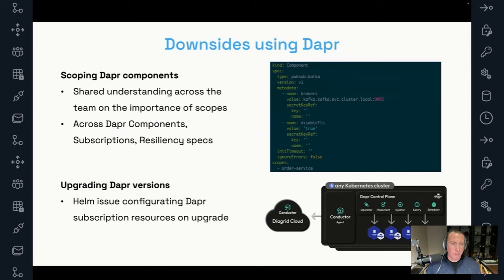Now that we've transitioned to Dapr, there were a few learning opportunities along the way. One of them was understanding that Dapr components have scope and how to properly use that scope inside the Dapr YAML files. Since we used gRPC communications, including gRPC for pub-sub, we initially encountered situations where topics were being delivered to services that weren't configured to handle them. We also had a minor configuration issue with pub-sub during a Dapr update, which temporarily prevented our services from running as expected. With the help of the Dapr community, we were able to quickly identify and resolve the problem. To avoid similar issues in the future, we now rely on Diagrid's Conductor to validate our configurations and ensure that everything is set up correctly.